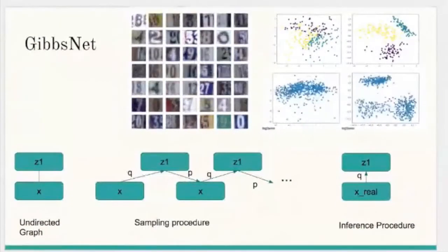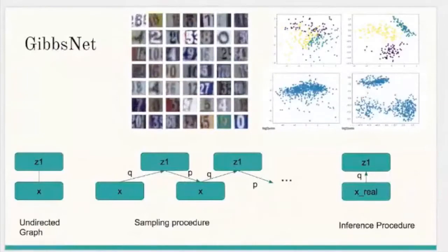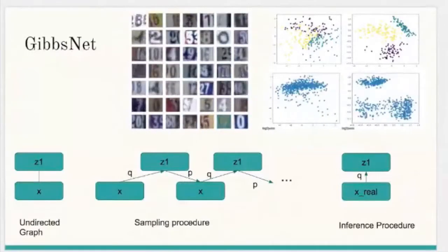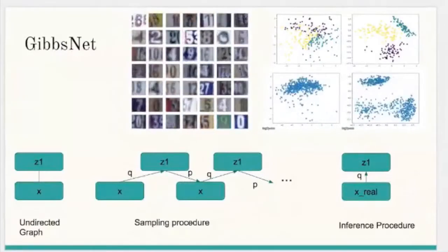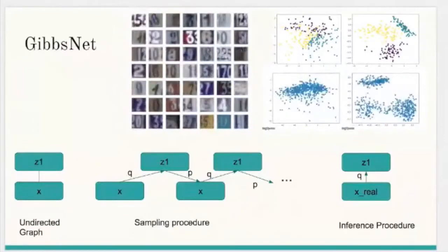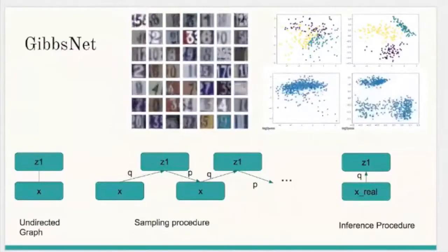Directed latent variable models that formulate the joint distribution as P(X|Z) = P(Z) × P(X|Z) have the advantage of fast and exact sampling.